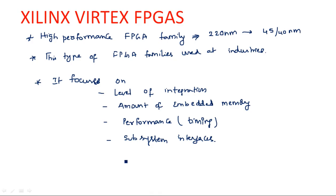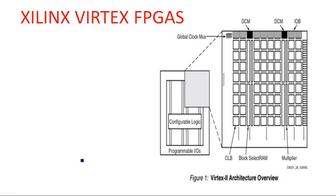From the architectural point of view, the programmable devices comprise input/output blocks and internal configurable logic blocks. We have configurable logic blocks (CLBs) and input/output blocks (IOBs) as the two main elements. Here you can see all these square boxes inside the architecture — those represent the configurable logic blocks.